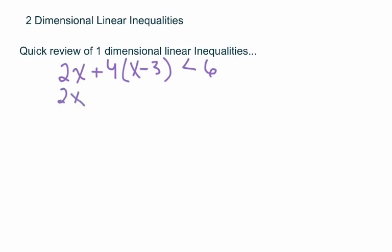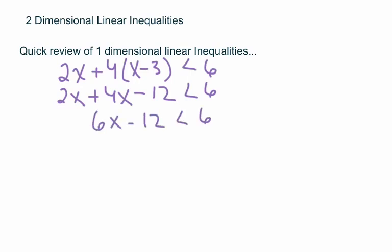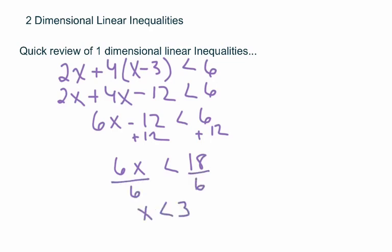We go ahead and solve this by distributing the 4: 4 times x is 4x, and 4 times negative 3 gives us negative 12. We combine like terms: 2x plus 4x is 6x. Then we add 12 to both sides, getting 6x. Negative 12 plus 12 is 0. 6 plus 12 is 18. Divide both sides by 6, and I get x is less than 3.